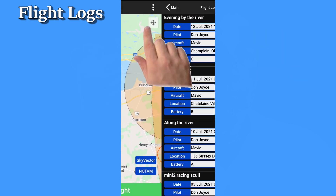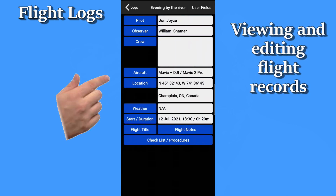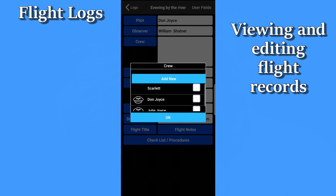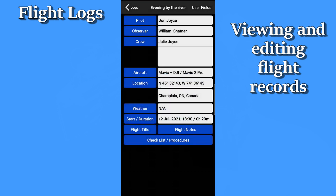When you tap on one of the logs from either the list, the map, or the calendar view, you can of course just look at the data, or you can change it. To edit an item, just tap on the field, make your change, and that's it. When you return to your flight log list, the changes will be saved, and they're saved automatically.